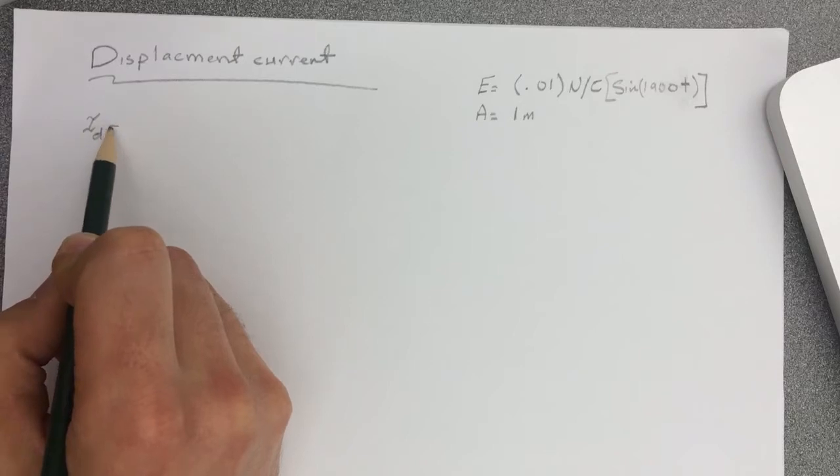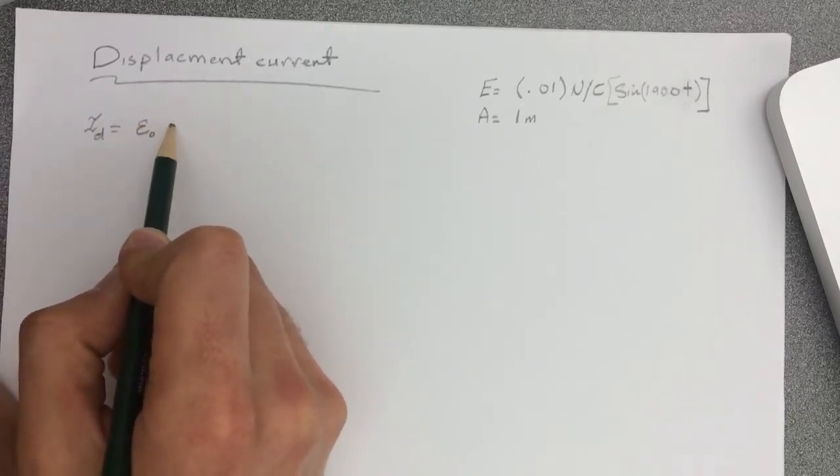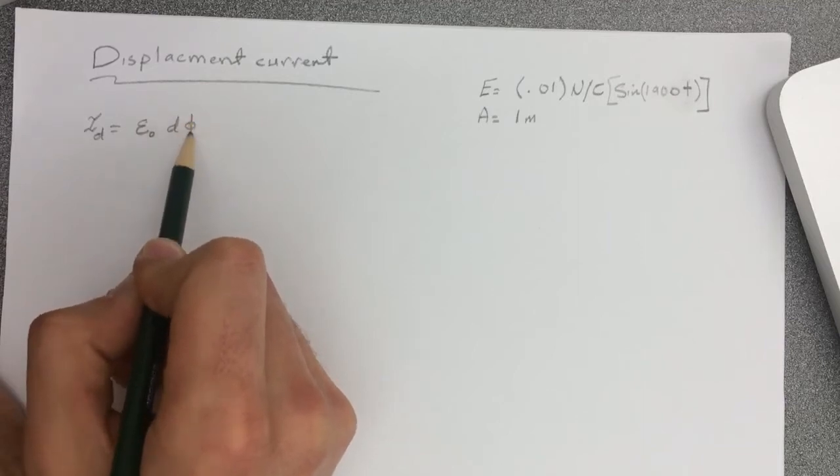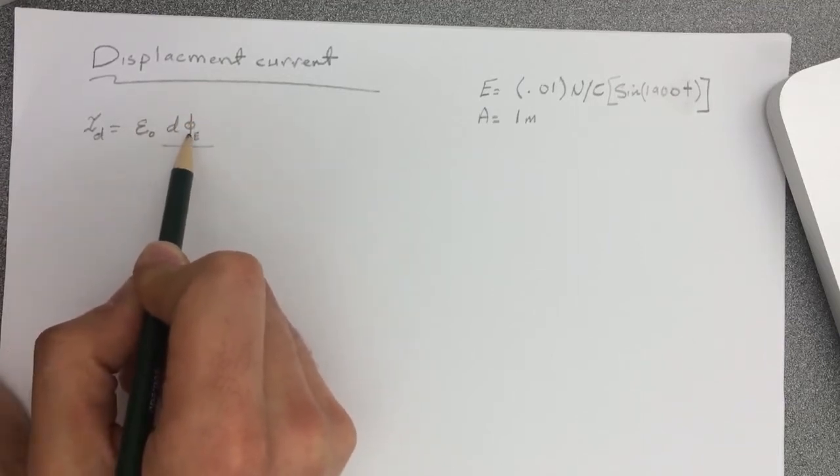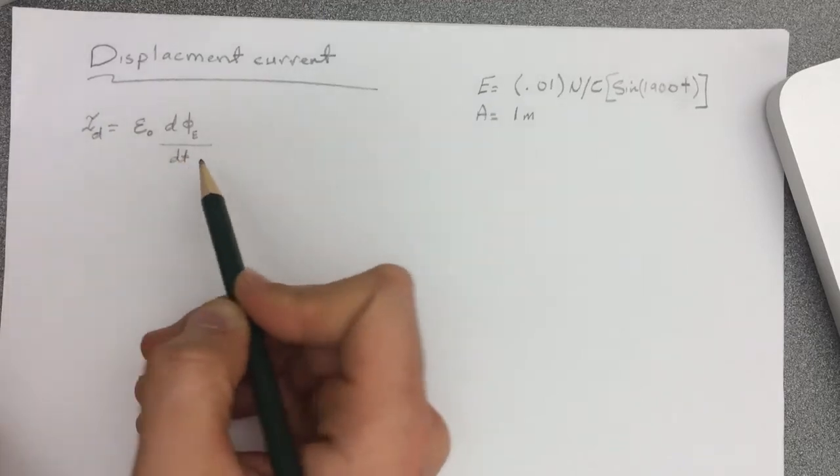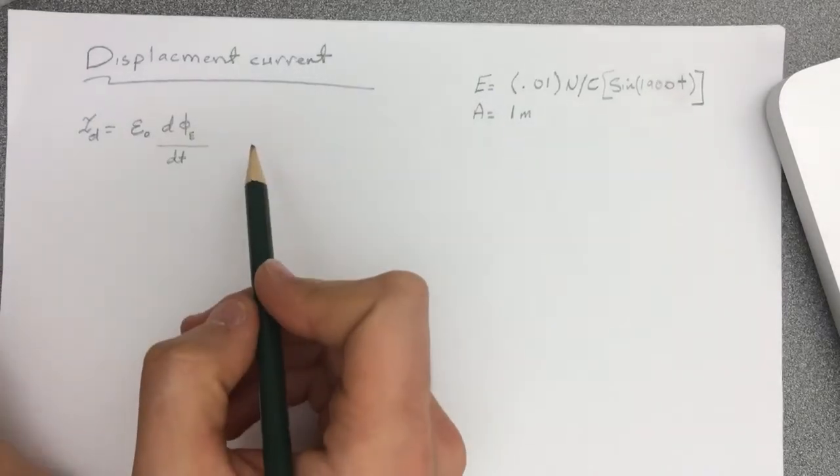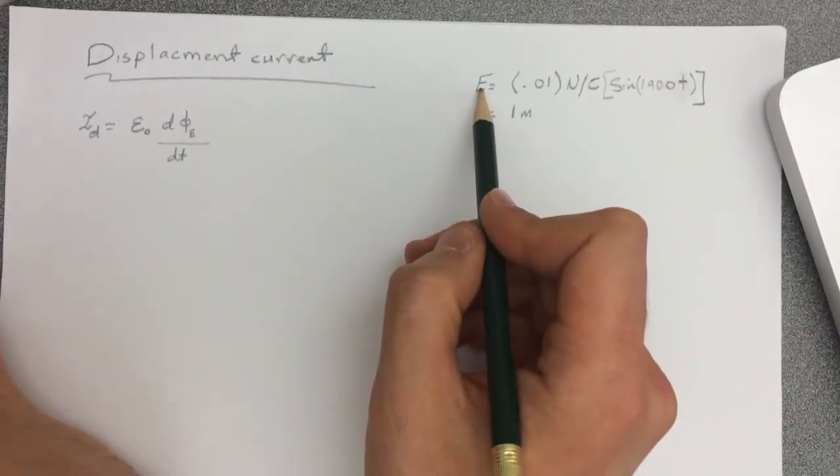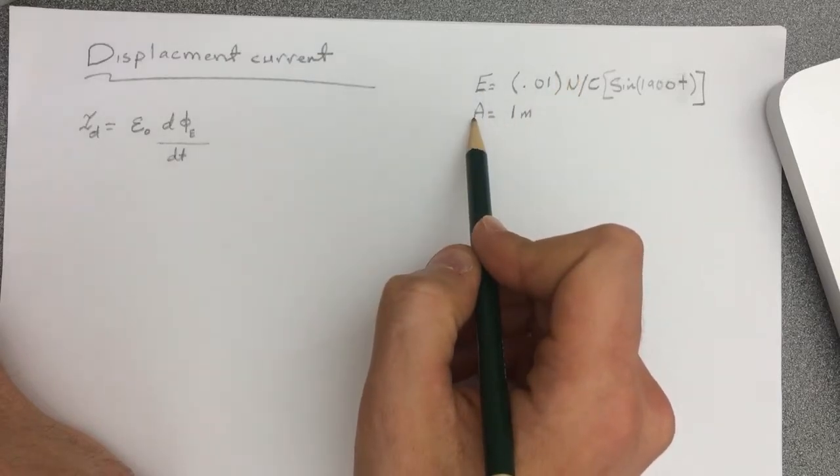The displacement current is equal to epsilon not d phi electric field over dt. This is the flux. Alright, so this is the information they give us. They give us the electric field, the equation for it, and they give us the area.